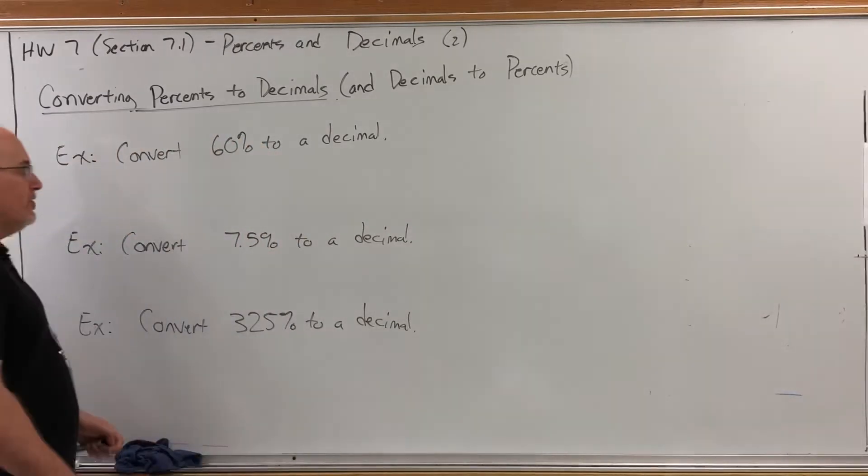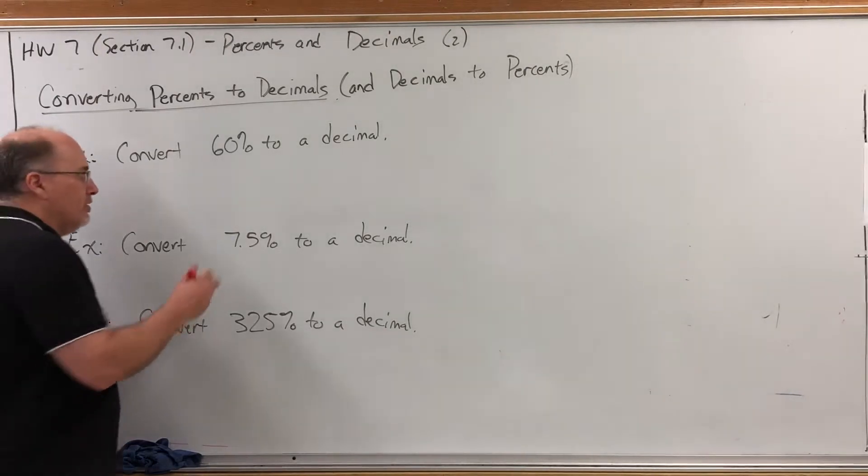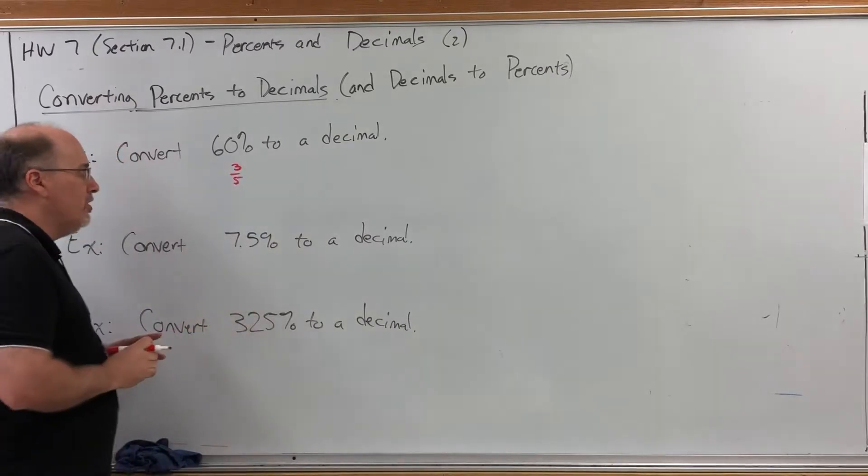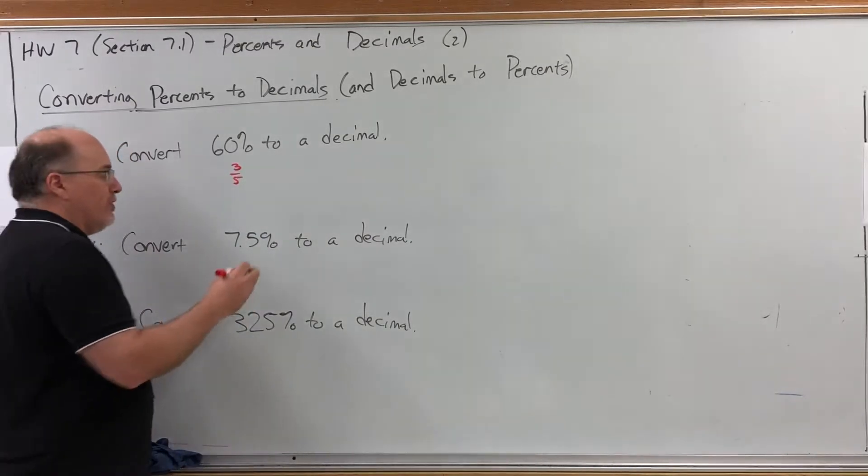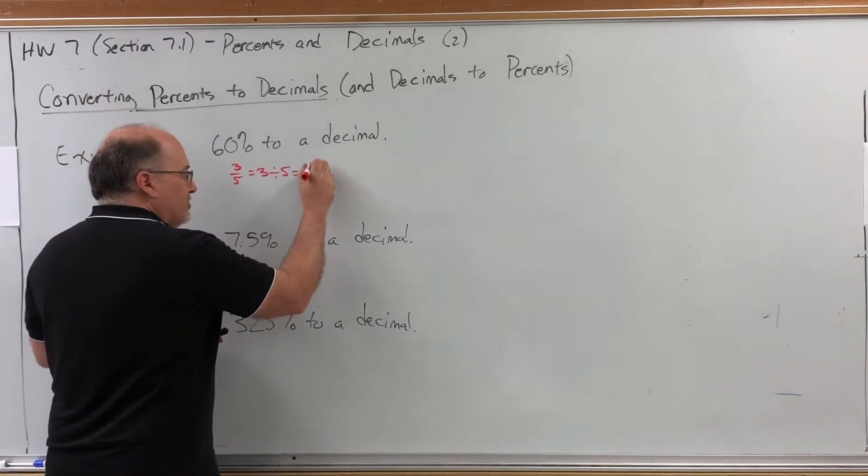For example, convert 60% to a decimal. Well, we know how to turn this into a fraction. We could have turned it into three-fifths like we did in the previous video, but a fraction is just a division problem. So if we did 3 divided by 5, it would give us 0.6.